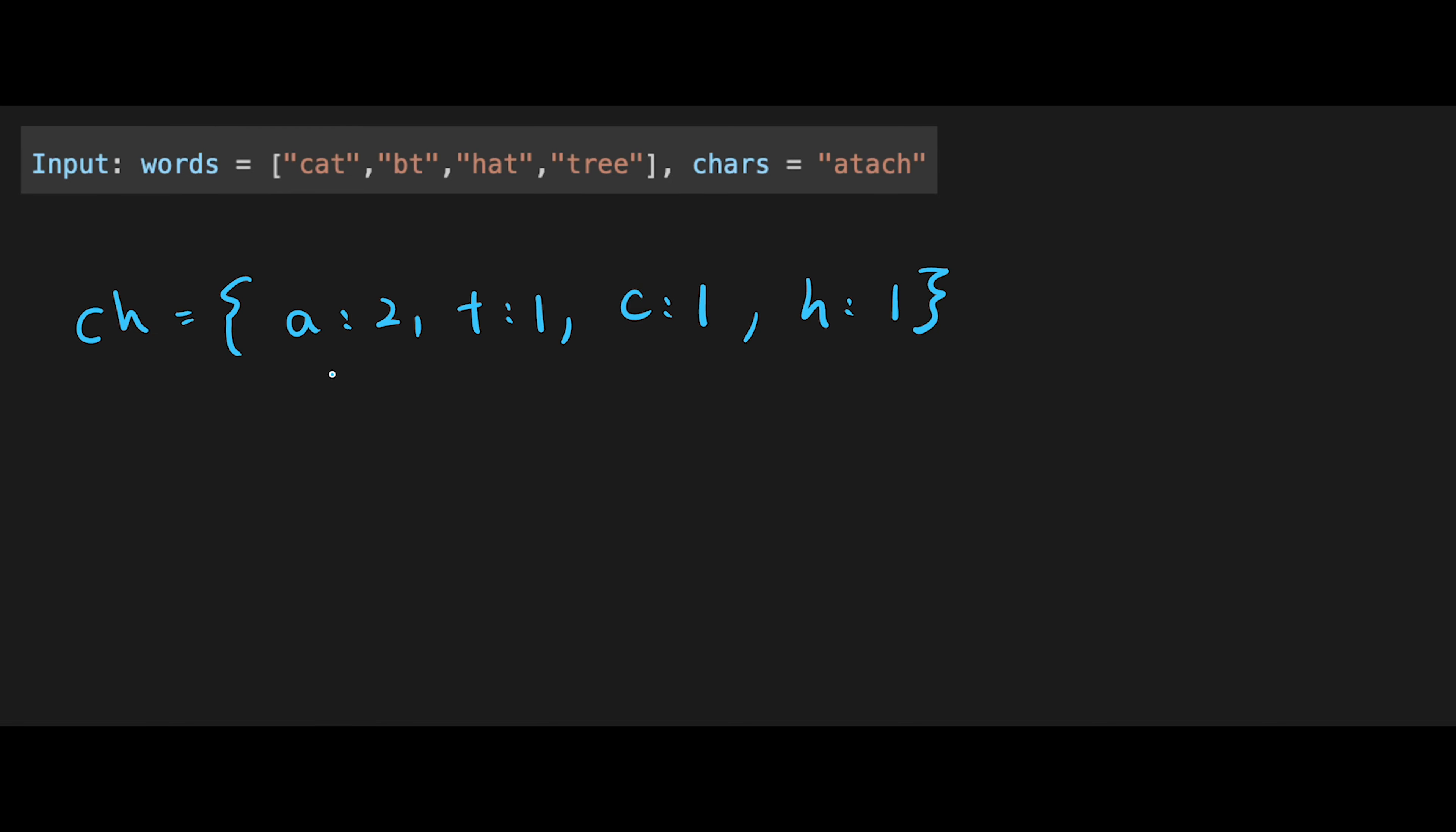Before we count down, we want to copy this ch. Because we want to use this ch hash map for every word. But if we update this ch hash map directly, so let's say the first word is cat, so in the end this ch should be like a is 1, t is 0, and c is 0, right? And then when we start to find a character with bt, the ch hash map starts like this. But we want to use this hash map, right?